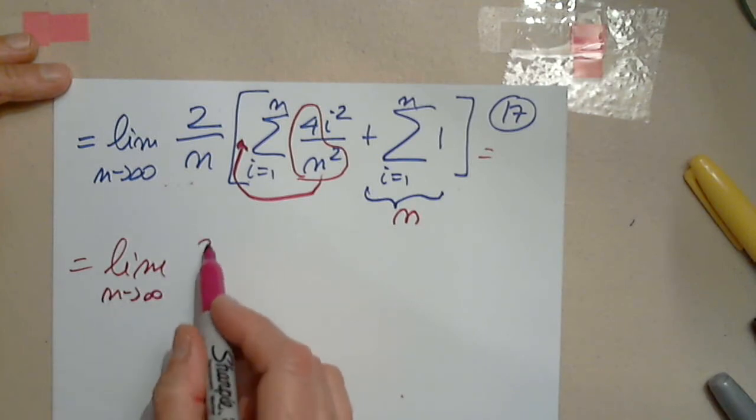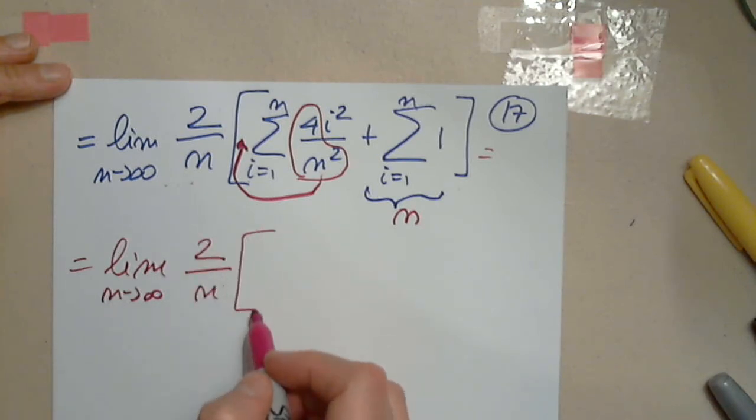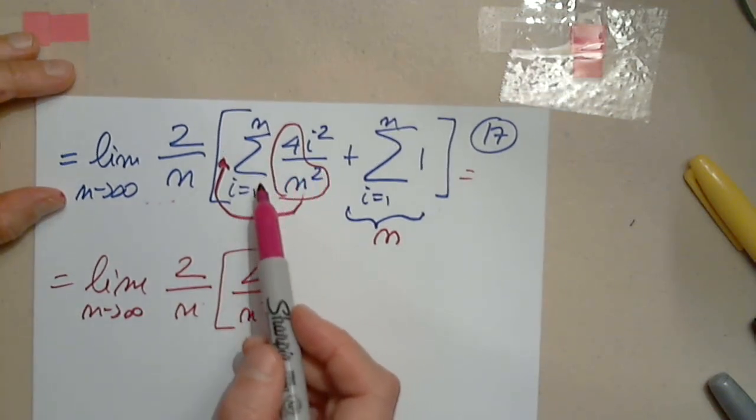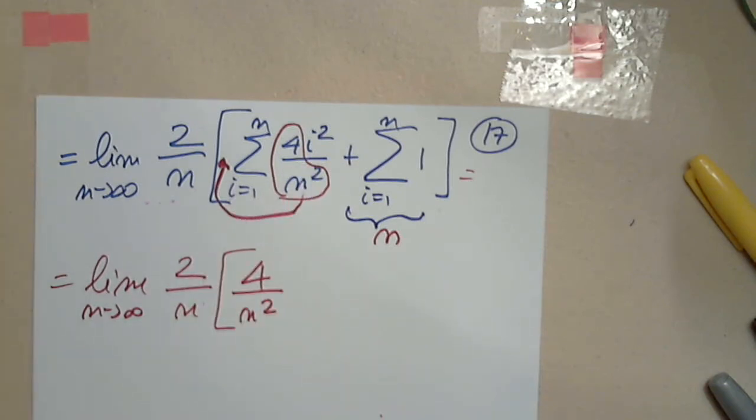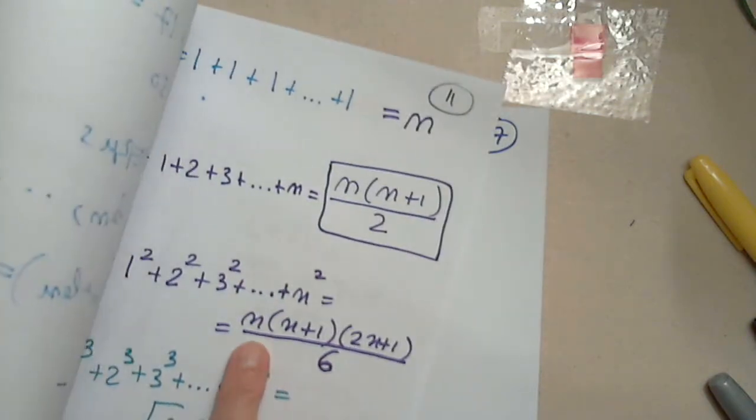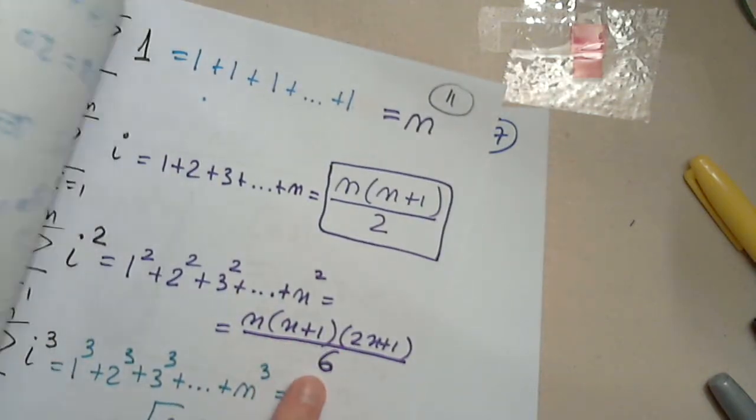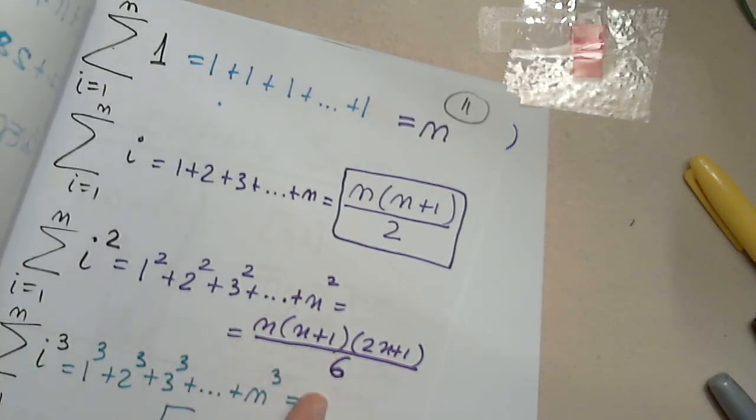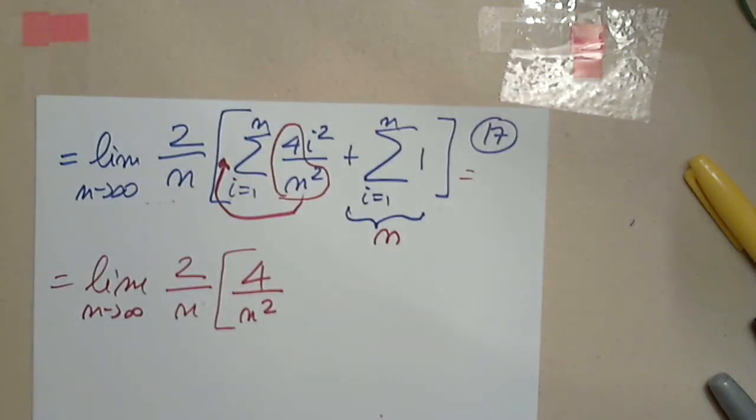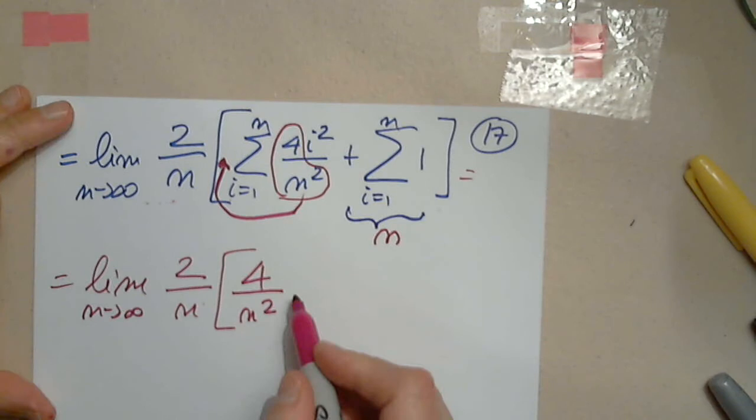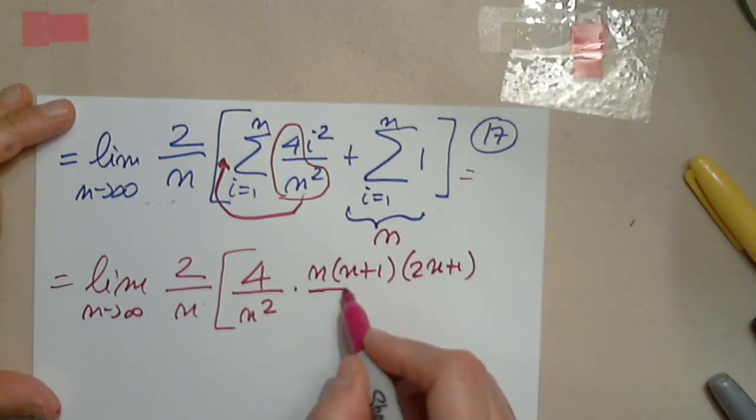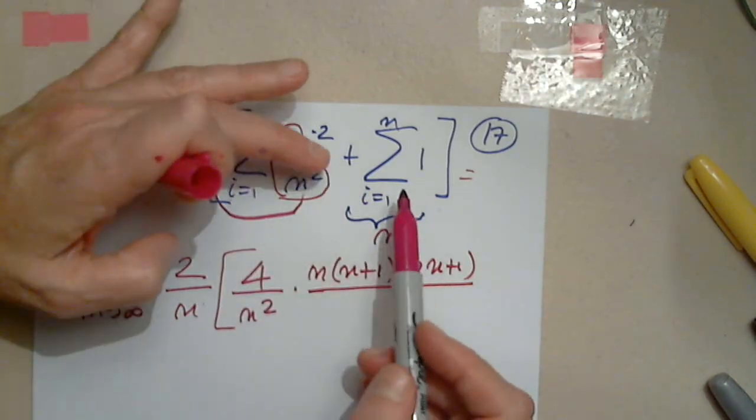Limit as n approaches infinity, 2 over n, 4 over n squared, and what is left here? The summation of i squared, the ugly one. I know the formula, it's that long one: n times n plus 1 times 2n plus 1 over 6. The summation of i squared. So I got rid of the summation: n times n plus 1 times 2n plus 1 over 6, that is the sum of i squared plus n.